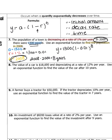In the calculator, type 1300 times parenthesis 1 minus 0.01 close parenthesis caret 8. You should get about 1,200 people — and that would be your answer.